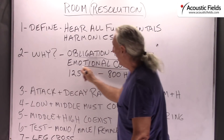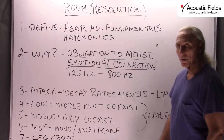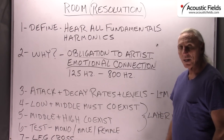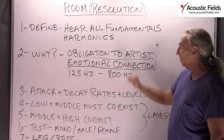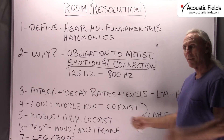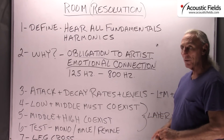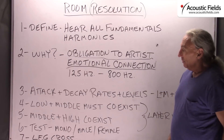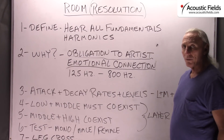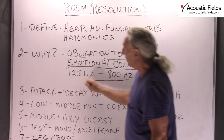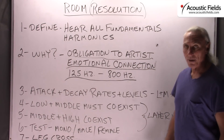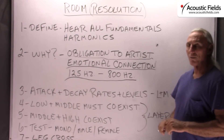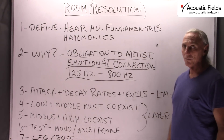And why? Because why is the artist doing a song? They're writing and singing about their emotions. So we want to connect to those emotions, and I think if you look at the artists that you work with or that you like, you get that emotional connection to their music. It's particularly strong in the 125 to 800 cycle range where vocals are. So you want to make sure that you've got great definition and resolution for the vocals.